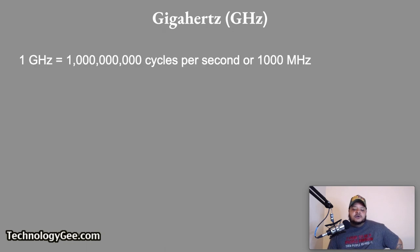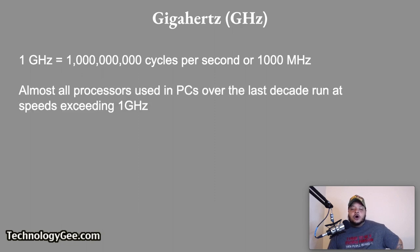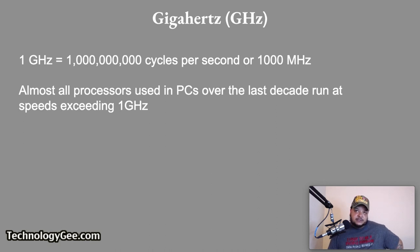A gigahertz is equal to 1 billion cycles per second, or 1,000 megahertz. Almost all processors used in PCs manufactured within the last decade run at speeds exceeding 1 gigahertz.